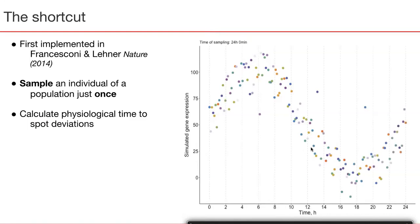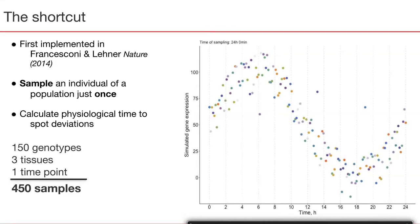Then, if technical noise is significantly smaller than the biological signal, we will be able to recapitulate a sinusoidal curve of circadian gene expression, which you can see here. In case a certain genotype results in a modified circadian rhythm — for example, with a shifted period or phase shift — we will detect such a line as an outlier of the curve, as shown here with three dots. As a result, we will sample the same number of genotypes — 150 — but just once, therefore reducing the number of samples 36 times, meaning that with under 500 samples we will be able to study all three tissues of interest.